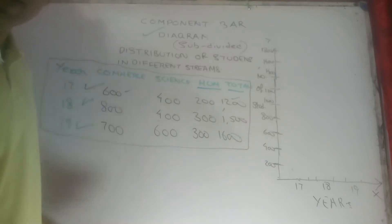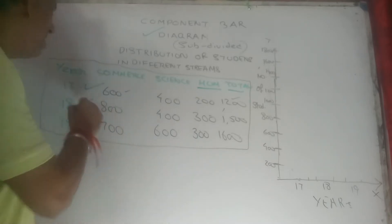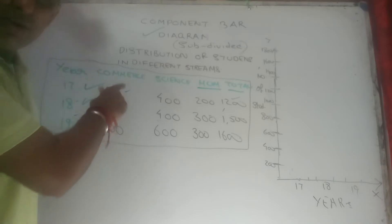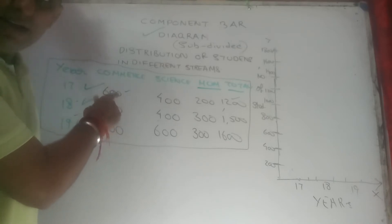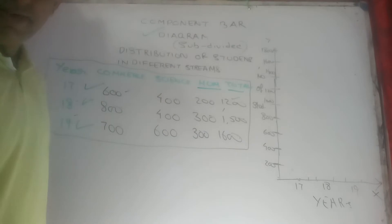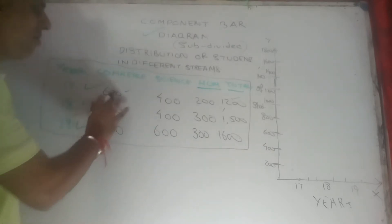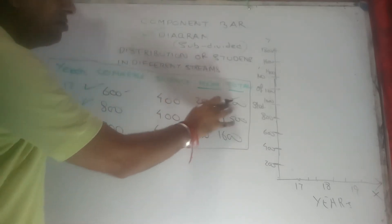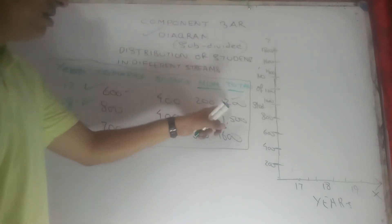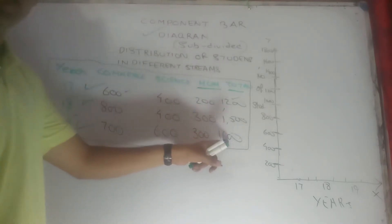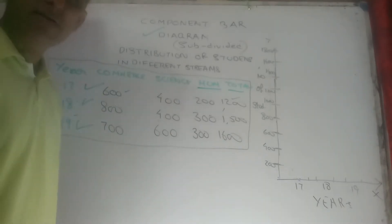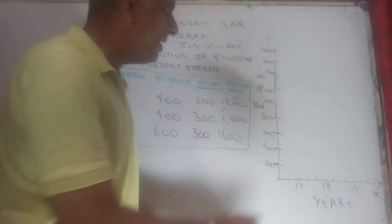Now, a table is given to you. Three years are given — 2017, 2018, and 2019 — of a particular school wherein there are three different streams: commerce, science, and humanities. For commerce, science, and humanities, the total is also given for each year as number of students. So 1200 is the total for the first year, 1500 is the total for the second year, and the total for the third year is 1600. Now the same thing we are going to do diagrammatically.